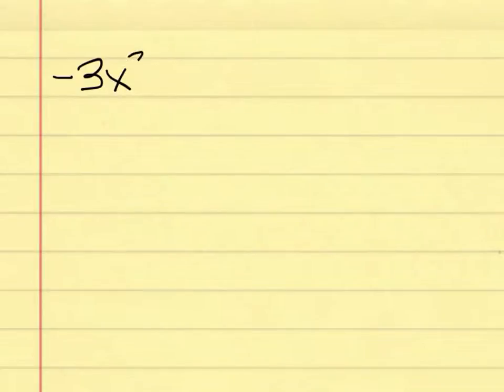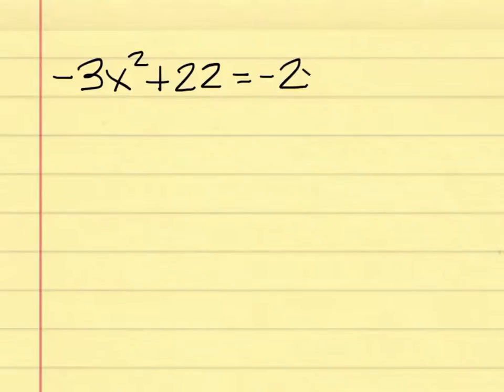Here is the first example. You have to tell me what to do. This problem is: negative 3x squared plus 22 equals negative 2x squared plus 71.